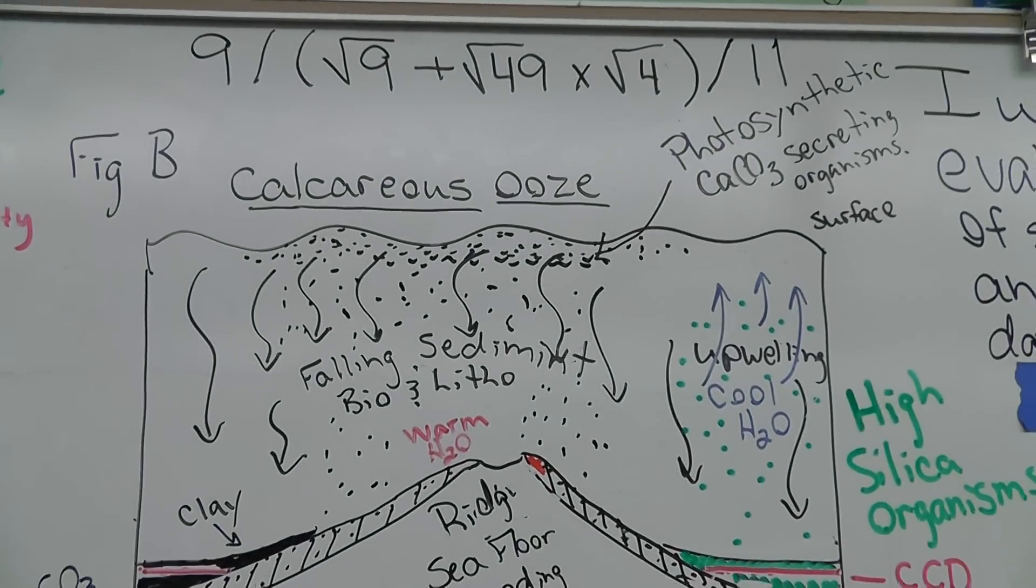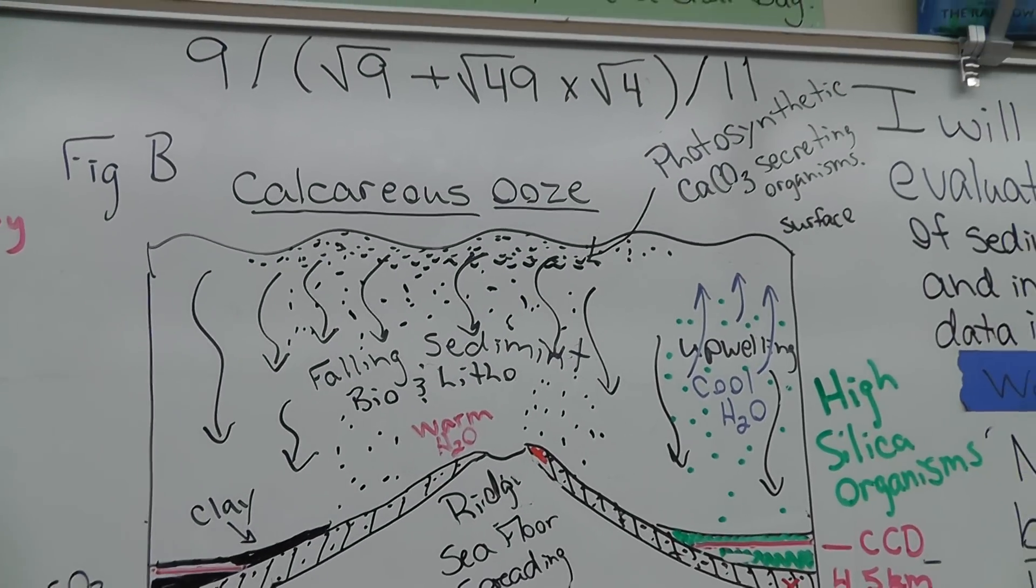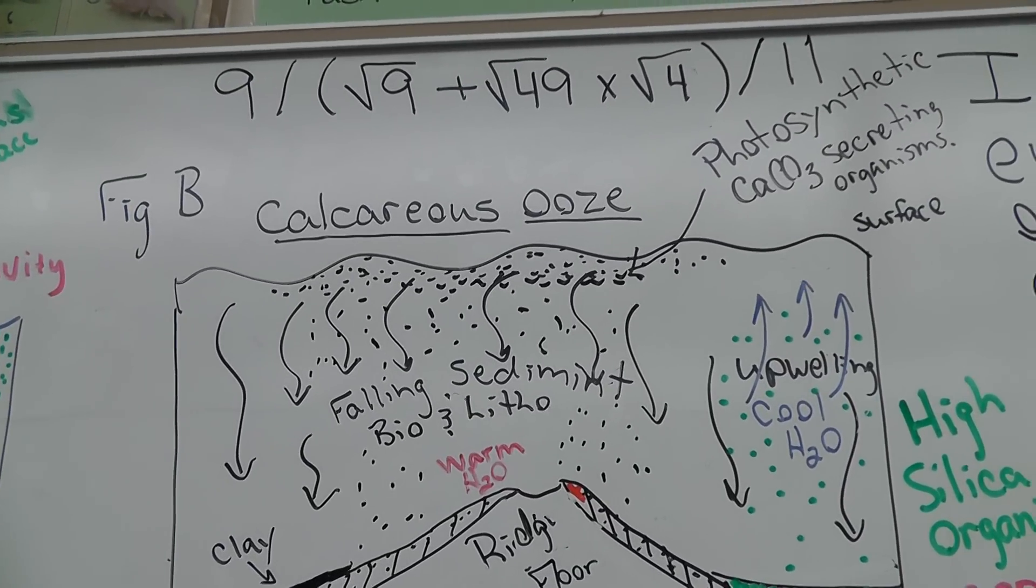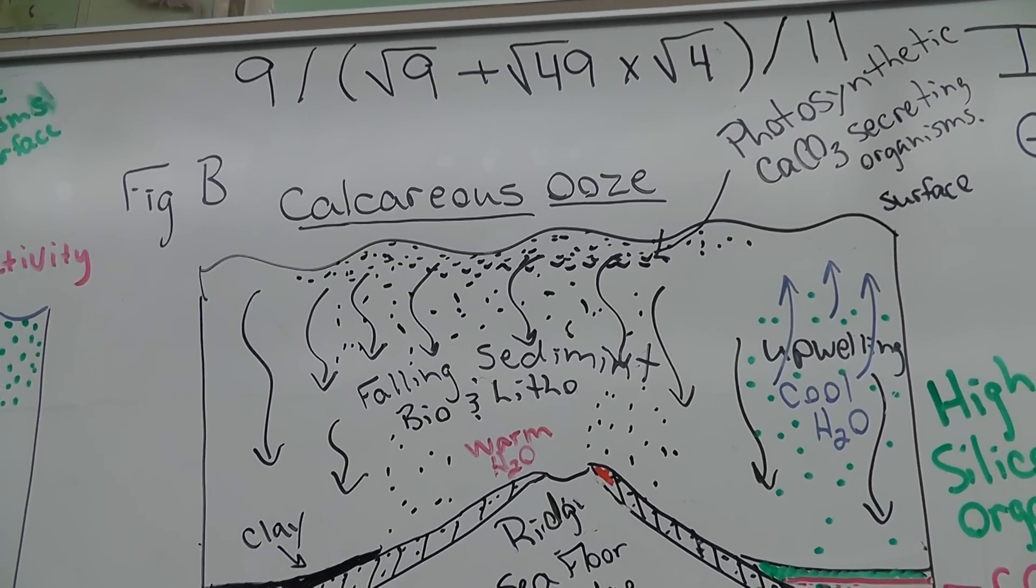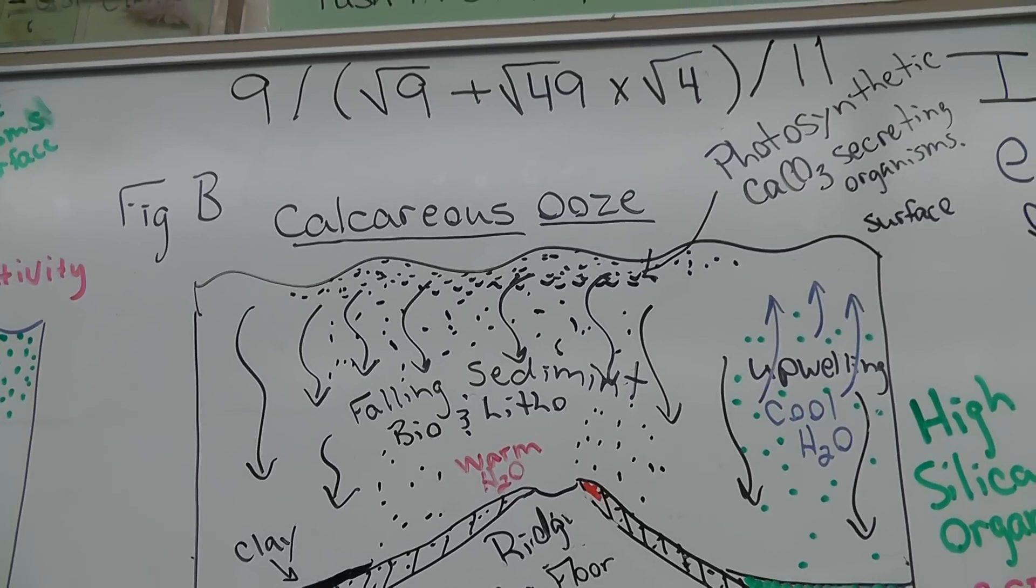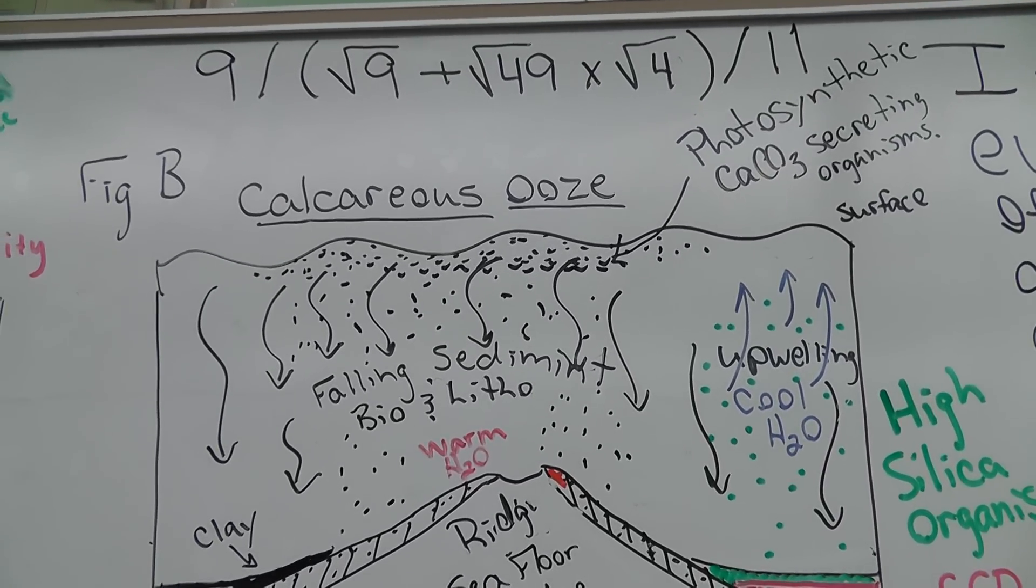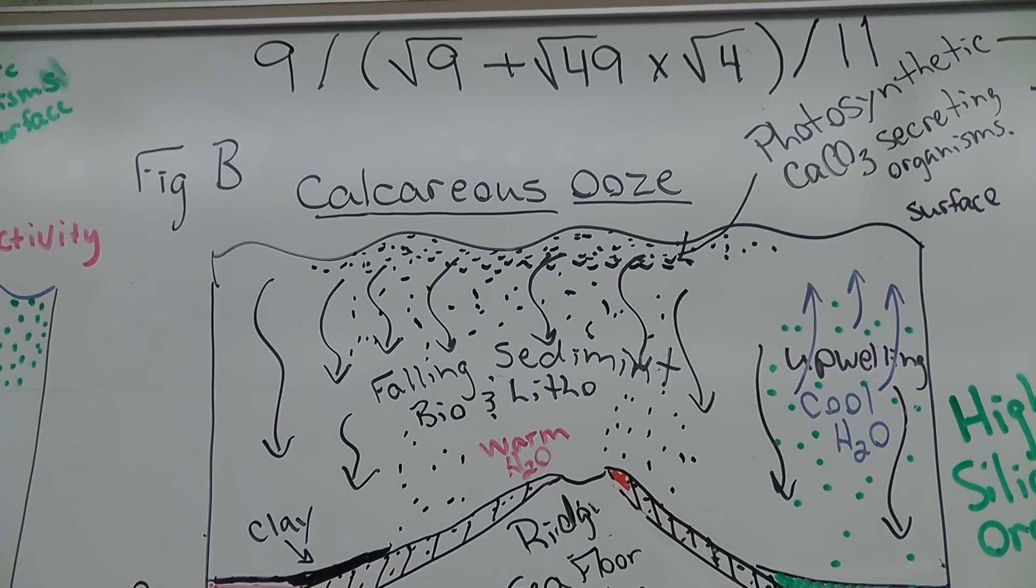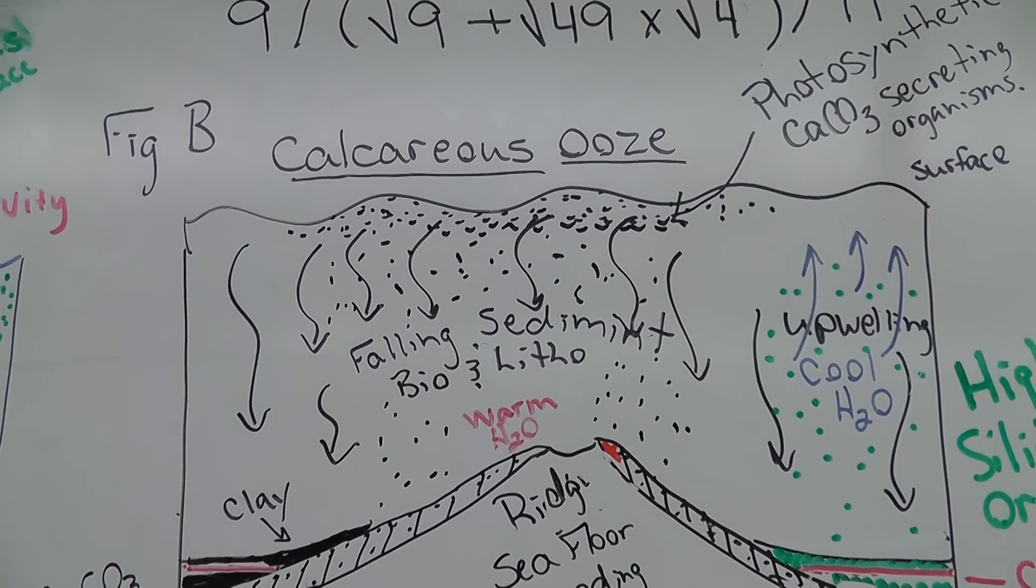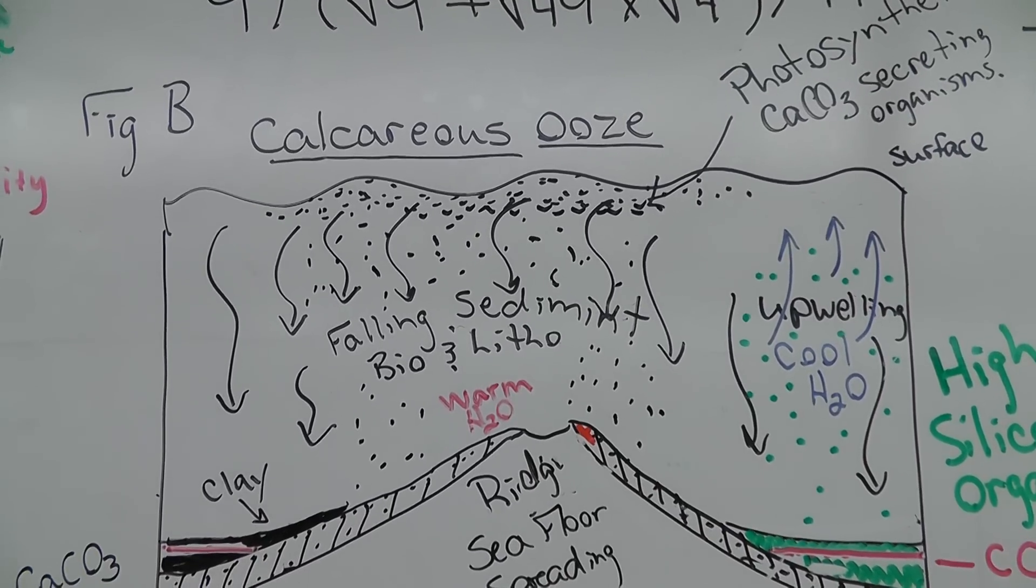Now let's look at figure B which talks about a calcareous ooze. Now calcareous ooze comes from organisms that produce calcite or calcium carbonate. We talked about two of them. We talked about coccolithophores and we also talked about foraminifera. Look in your notes.